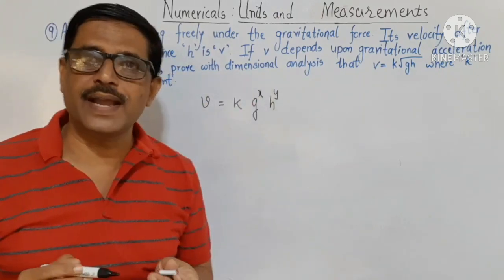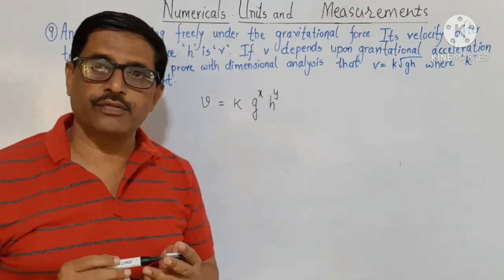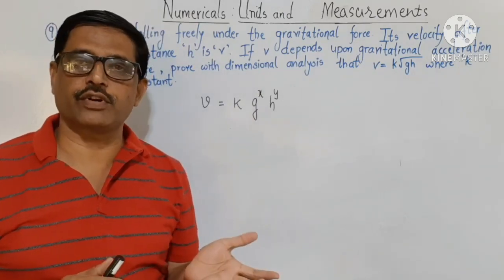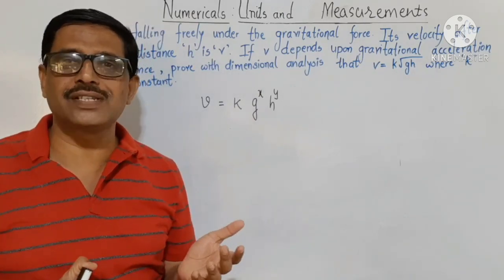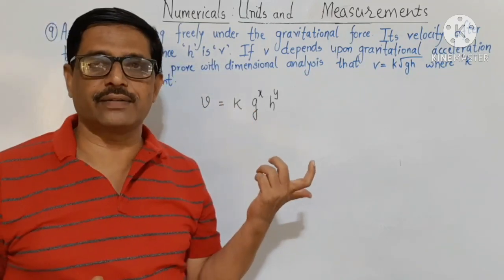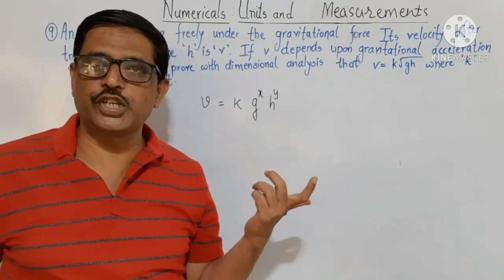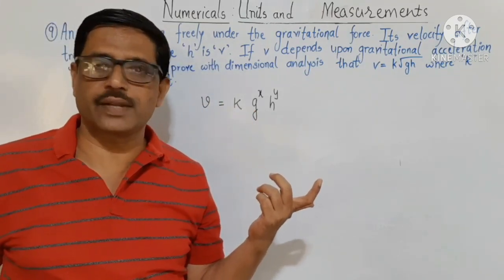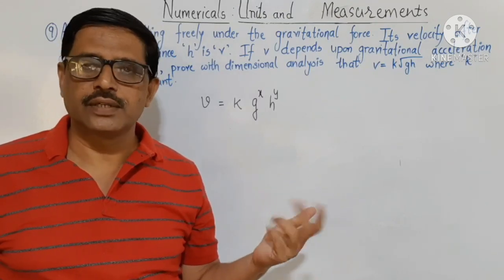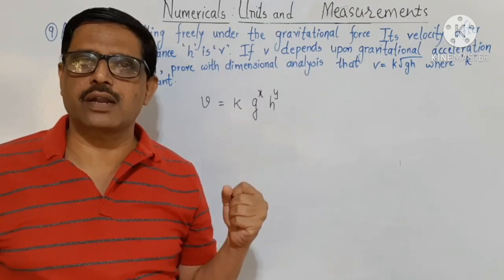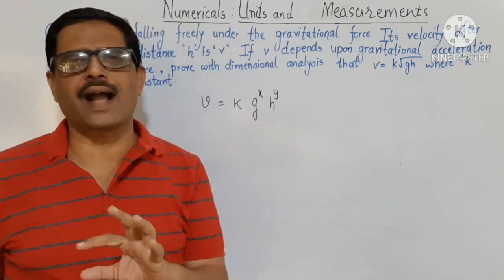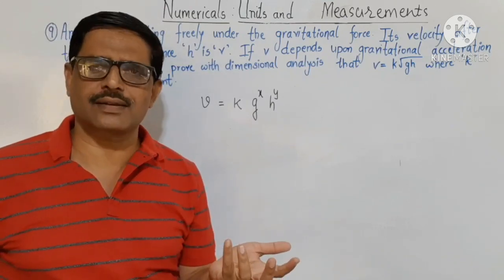To determine the formula for velocity, we find the values of x and y. Note that we cannot find the constant k using dimensional analysis — that is a limitation of this method.